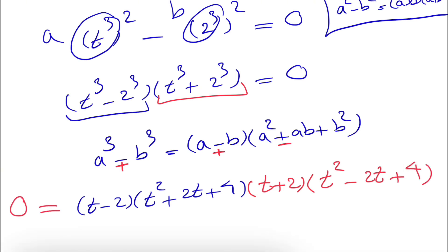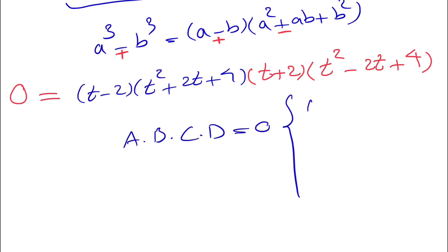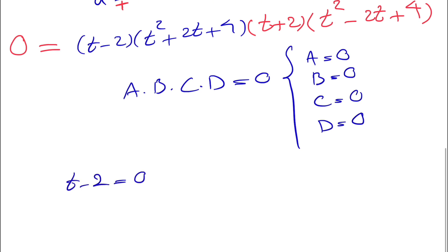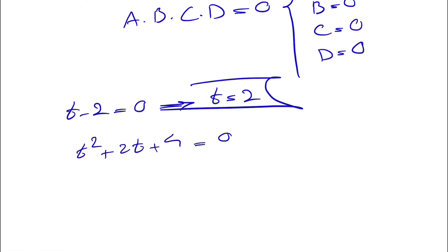We now have four expressions multiplied together equal to 0. When a product abcd equals 0, each factor can individually equal 0. So solving t minus 2 equals 0 gives t equals 2 — that's the answer we could guess at the start, so that's our first answer. Next, t squared plus 2t plus 4 equals 0. Using the quadratic formula, a equals 1, b equals 2, c equals 4, so t equals negative b, which is minus 2, plus or minus the square root of the discriminant, divided by 2a.